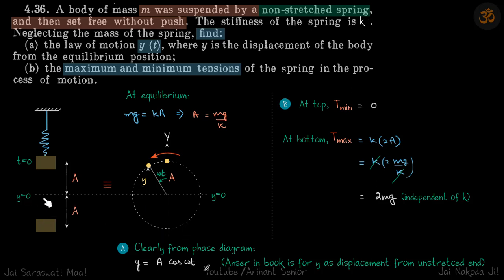They have given that Y is the displacement of the body from the equilibrium position. So if this is the equilibrium position, let's say Y is the displacement of the body. So this phase diagram we are considering Y to be in positive Y direction and this is where Y is zero. Initially the particle is here and then when it is let go it will start to perform SHM.